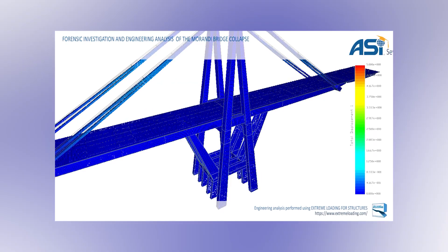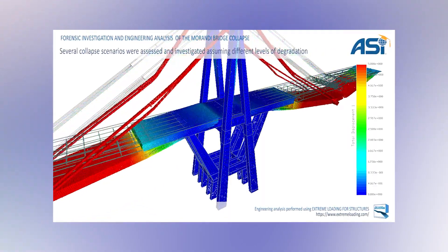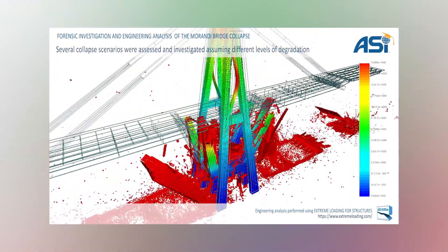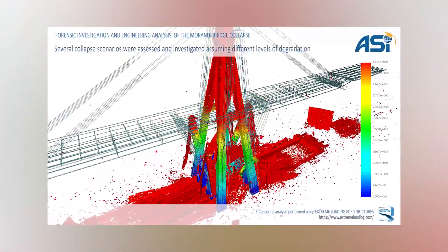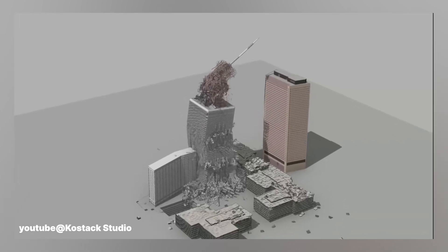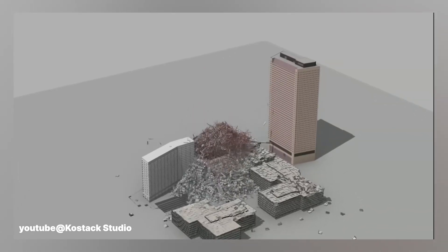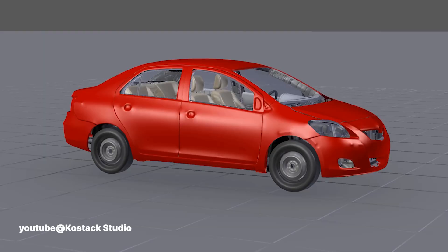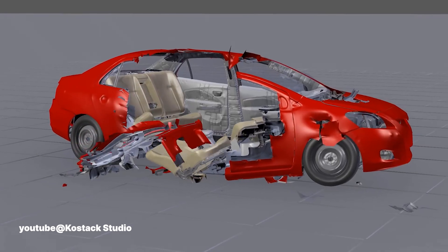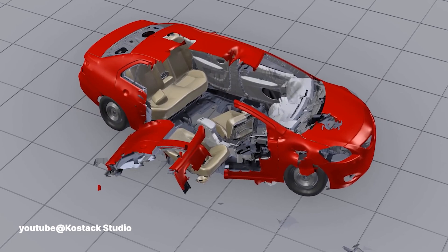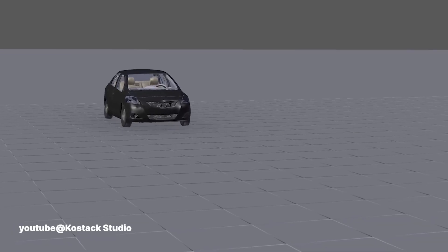Forensics also uses 3D to recreate scenarios. When a building collapses, for instance, 3D recreations are used to explore the possible causes. These visualizations help investigators understand what went wrong and how to prevent similar incidents in the future. A great example can be found on Kai Kostak's YouTube channel, where he uses a modified version of Blender to recreate the collapse of bridges and buildings. He also simulates car crashes with millions of polygons, showcasing realistic metal deformation and physics — demonstrating just how powerful 3D tools can be in forensic analysis.